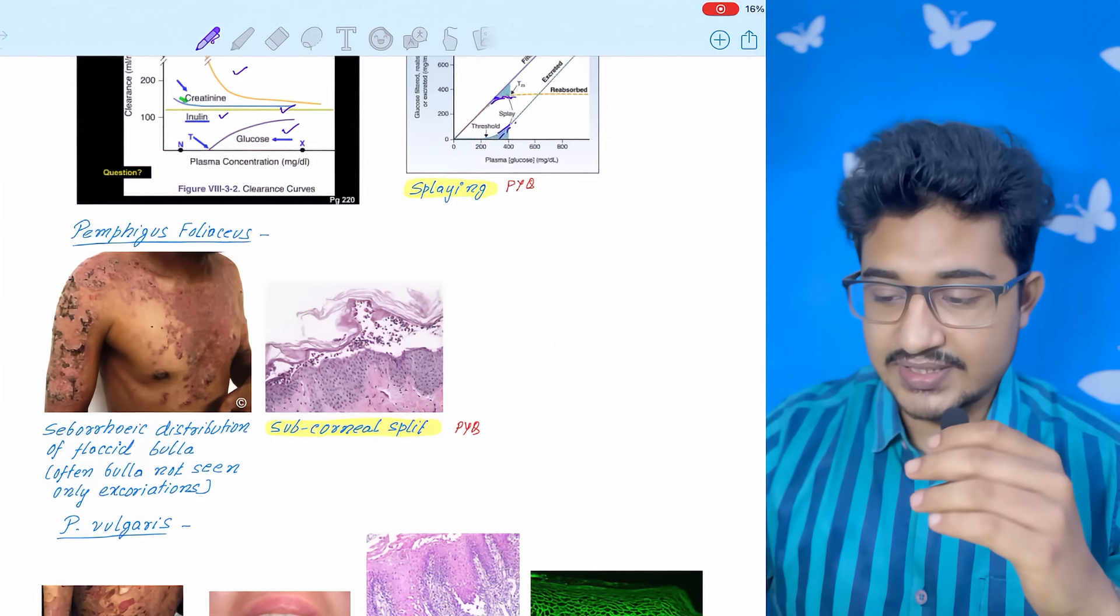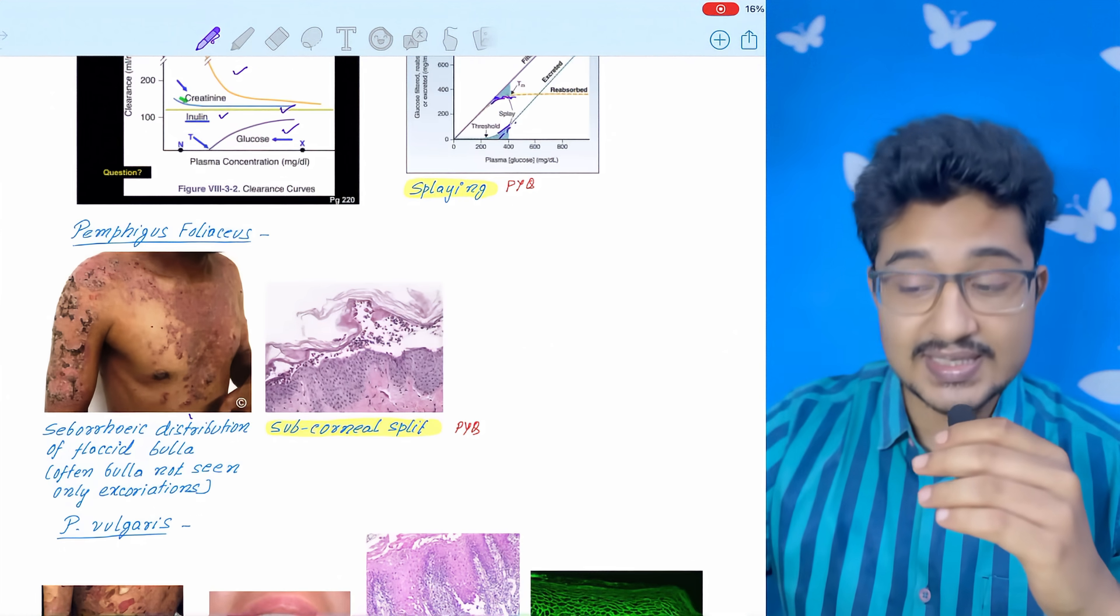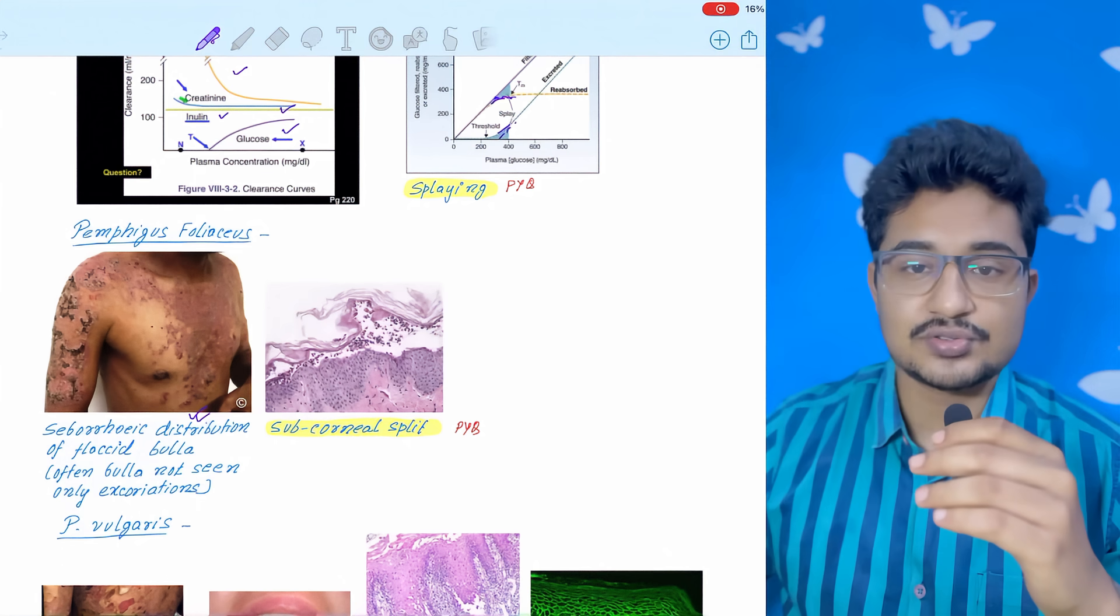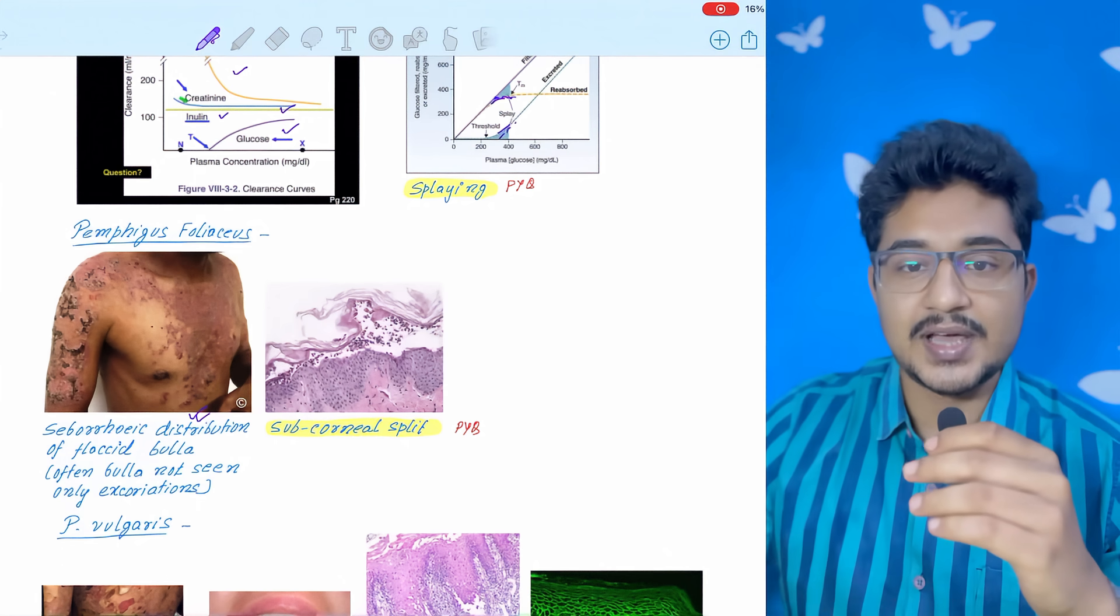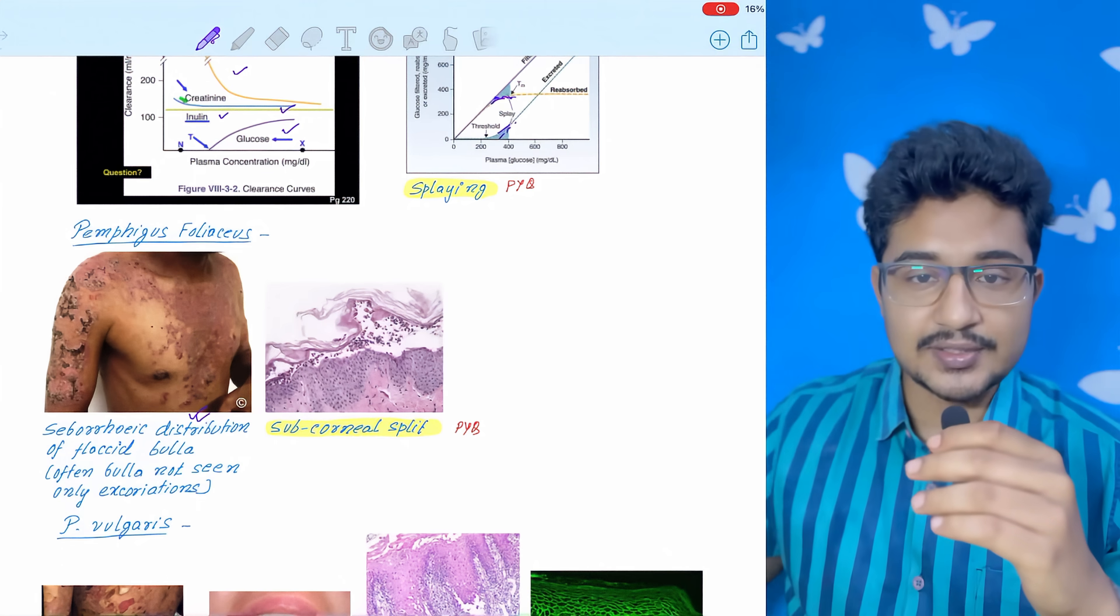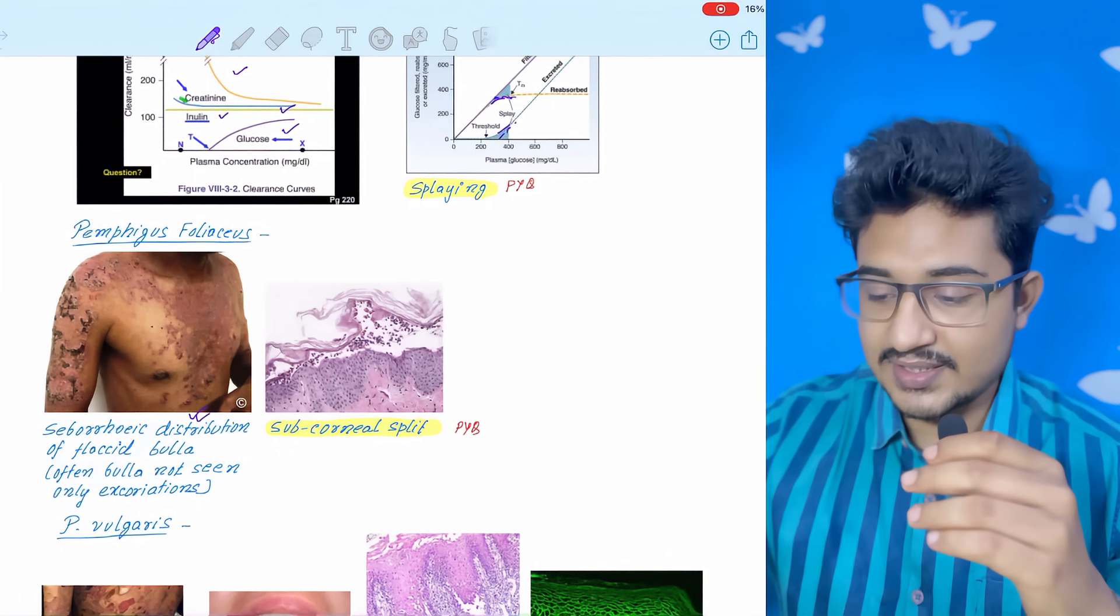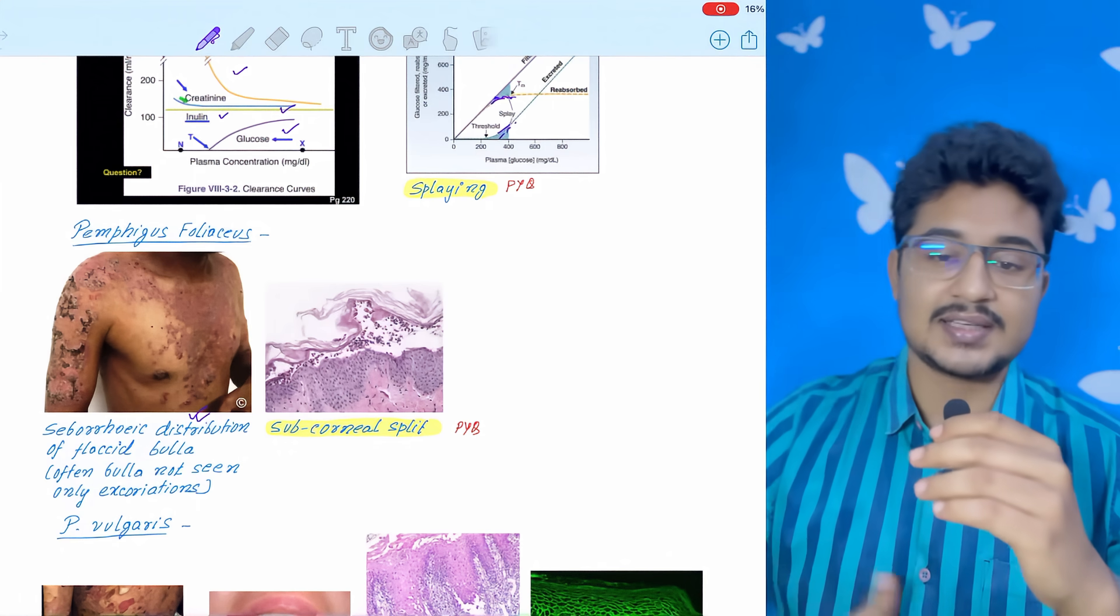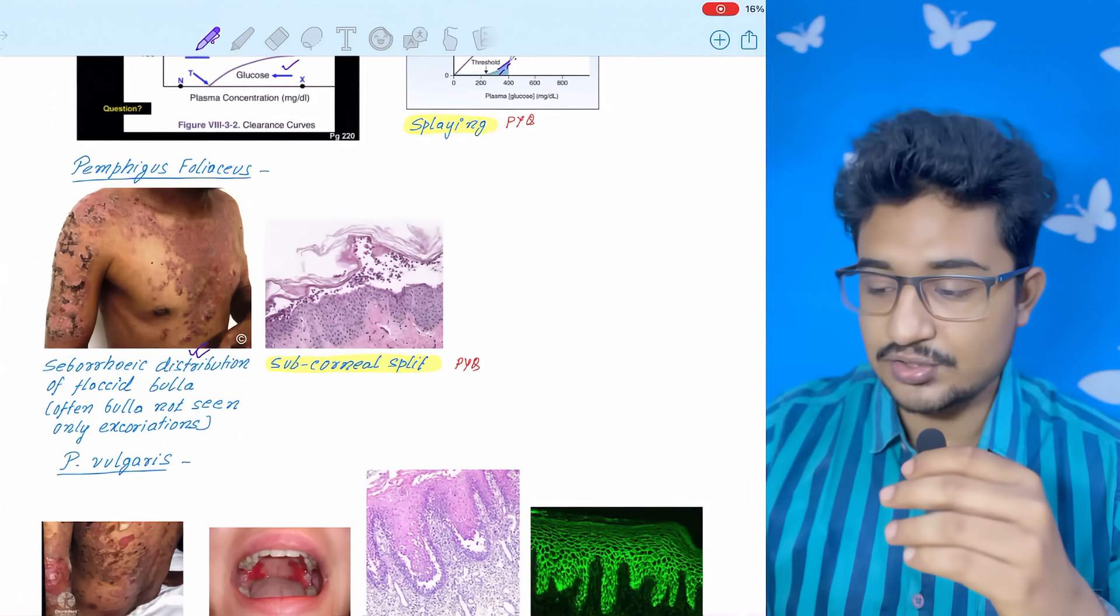First is pemphigus foliaceus. In the diagram you won't see any blisters because it is a subcorneal split. The layer is so thin that it exfoliates and falls off on its own. And it is seen in seborrheic distribution, meaning in the chest, back, axilla, and groin. In this, you don't usually see oral involvement.